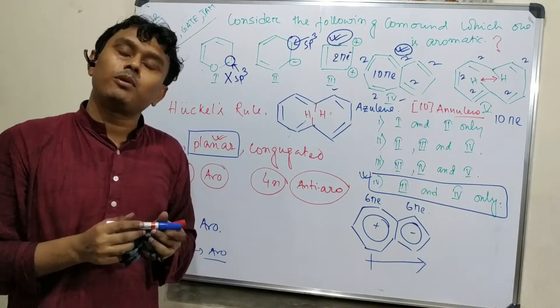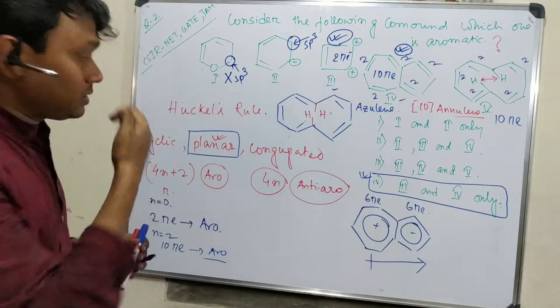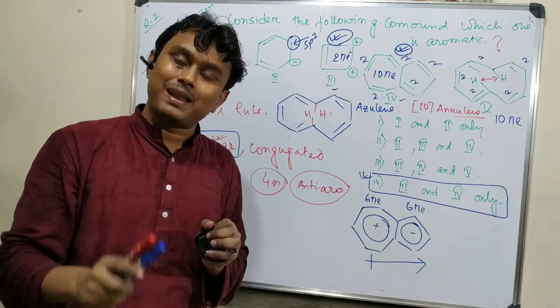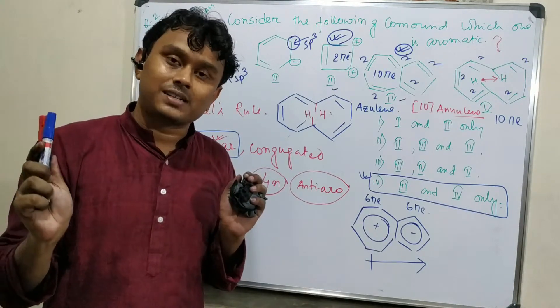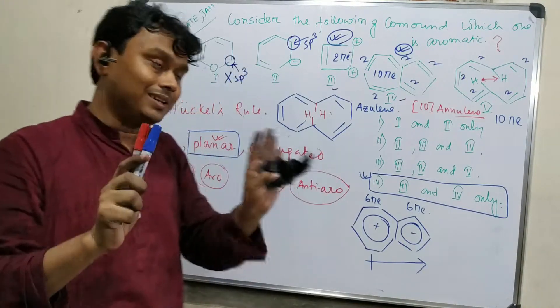Right now I will tell you about the tricks to solve this question in one minute. When you see the question, you need to keep it in mind: what is Huckel's rule? Cyclic, planar, conjugated, 4n plus 2 number of pi electrons. These factors. And they asked aromatic, so 4n plus 2 number of pi electrons, you have to think only that.